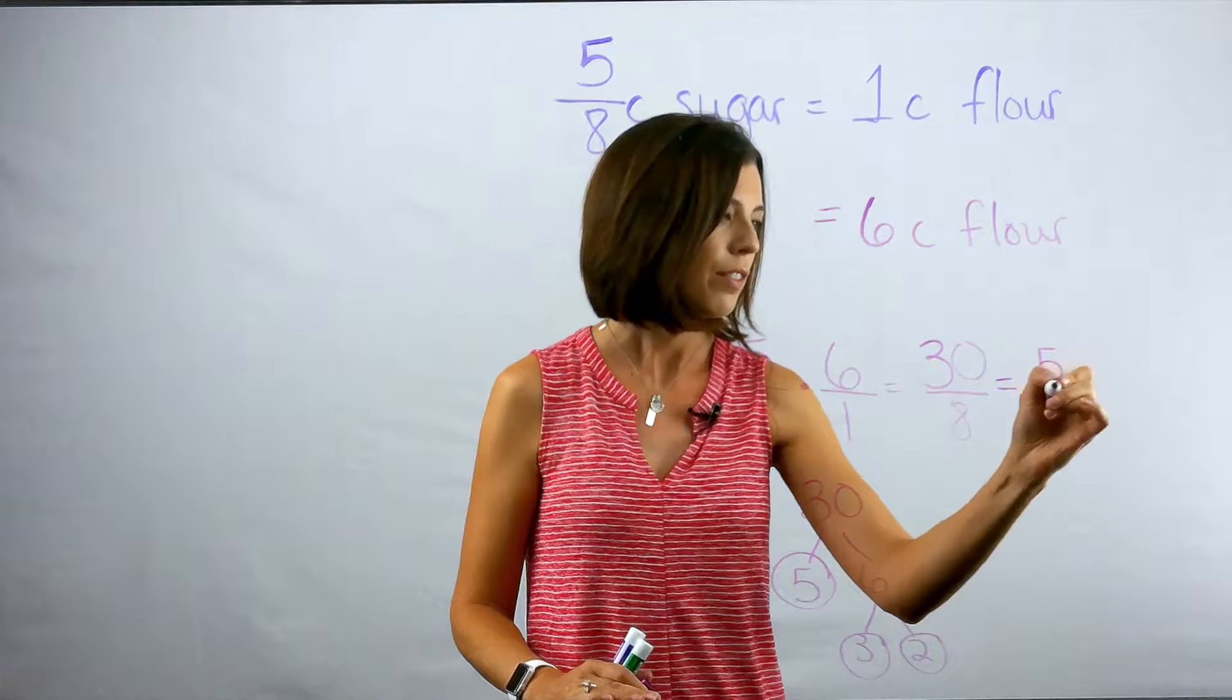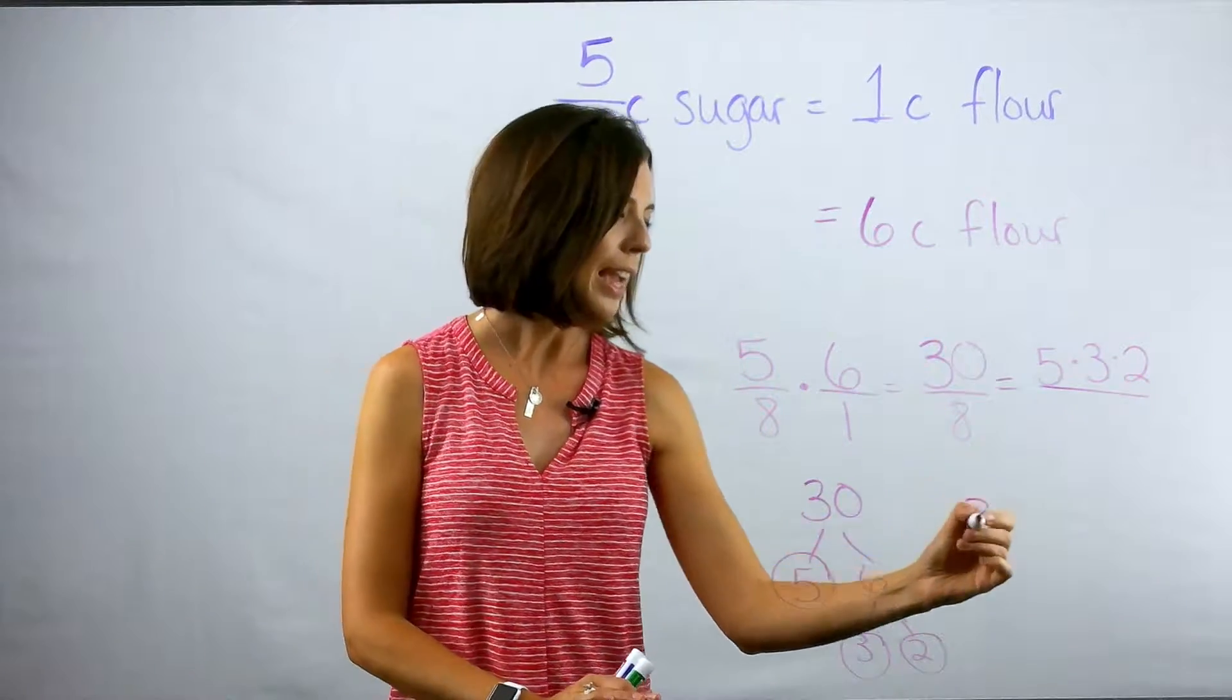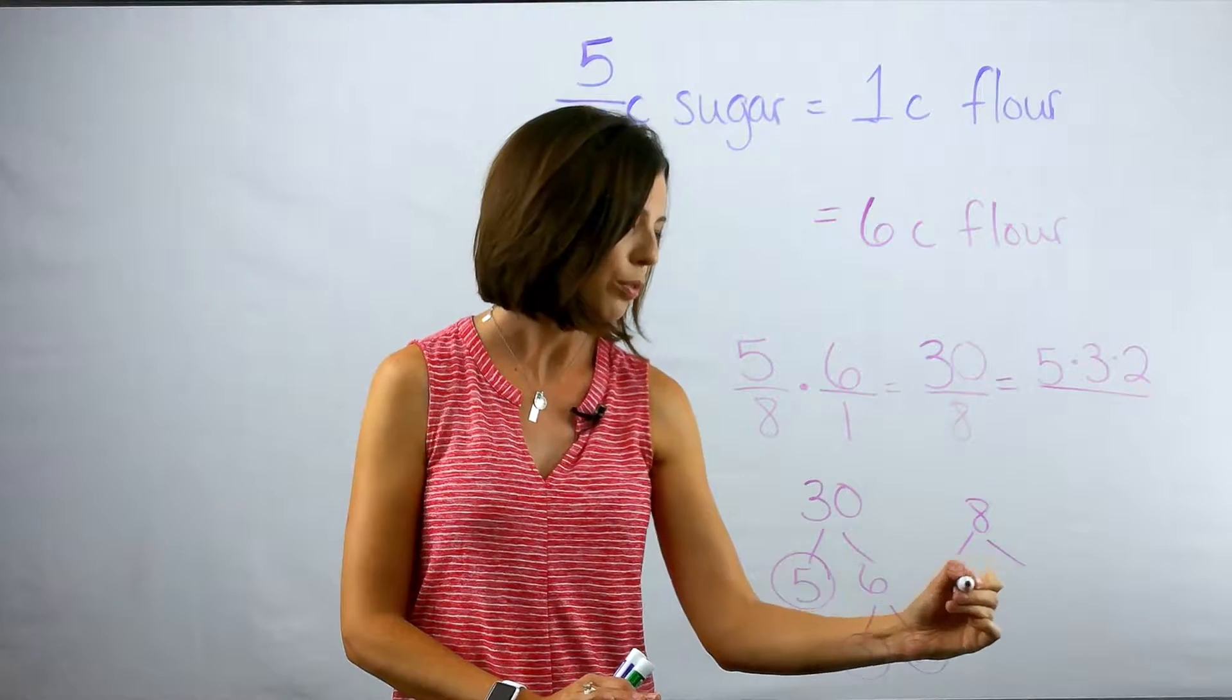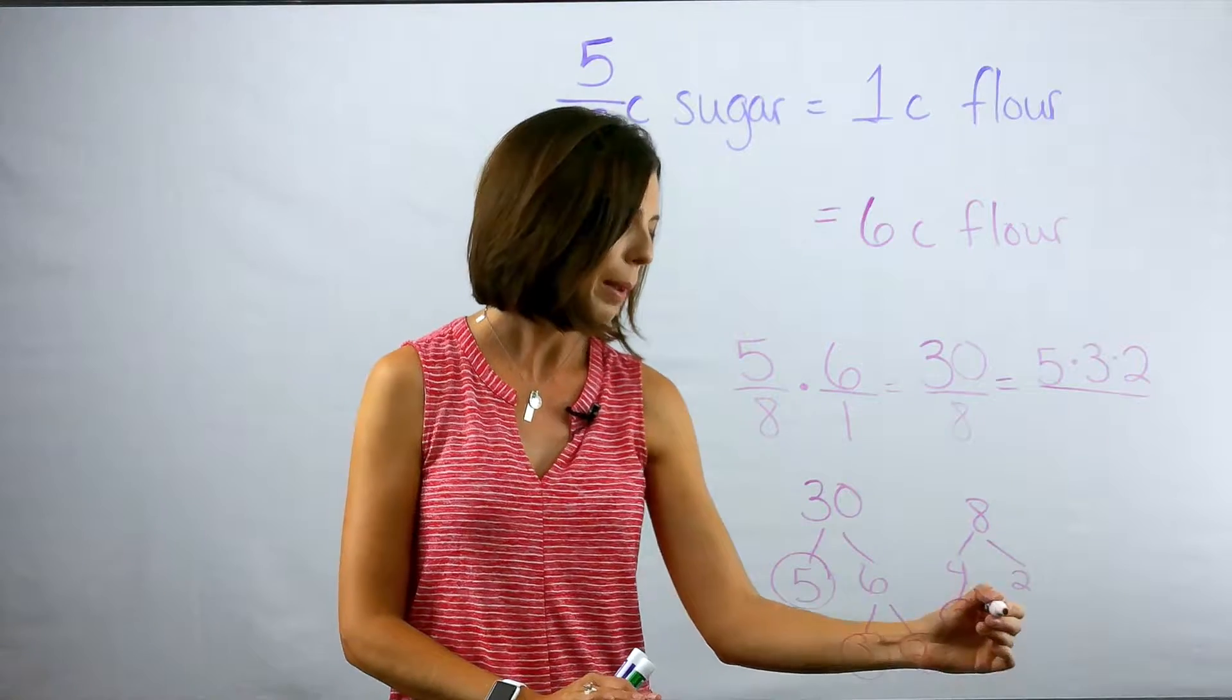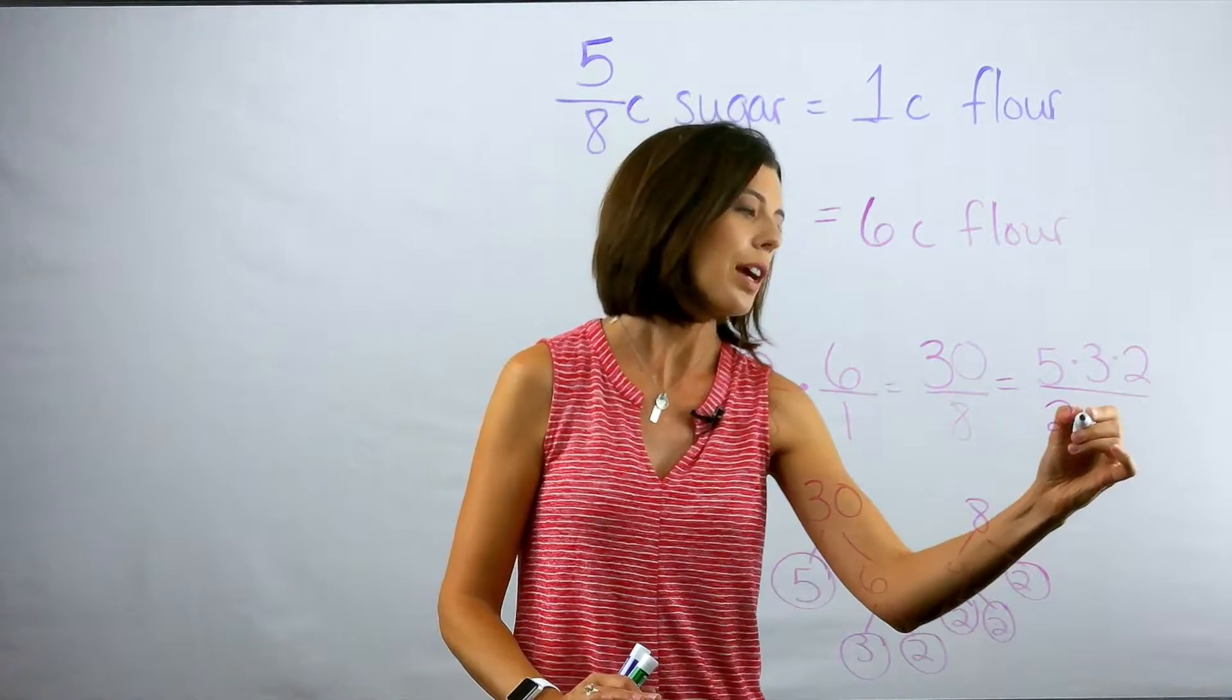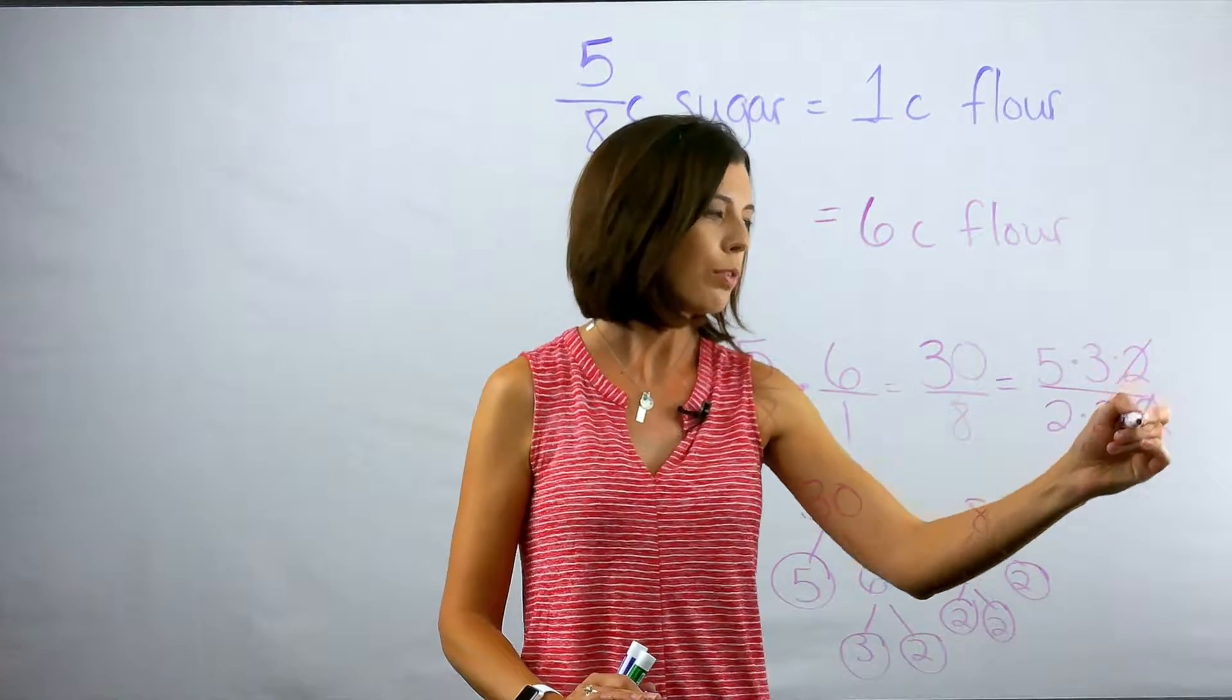So I'm going to write that out: five times three times two. And then I know that eight can be broken out into four times two, and then four can be broken down into two times two. So my prime factorization of eight is two times two times two.